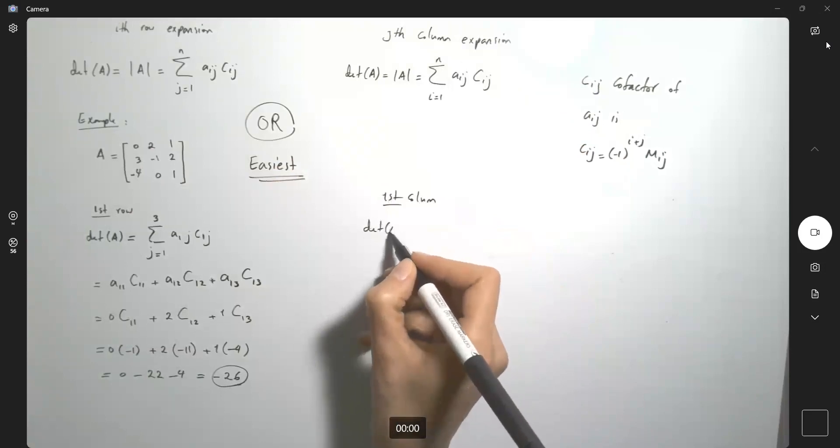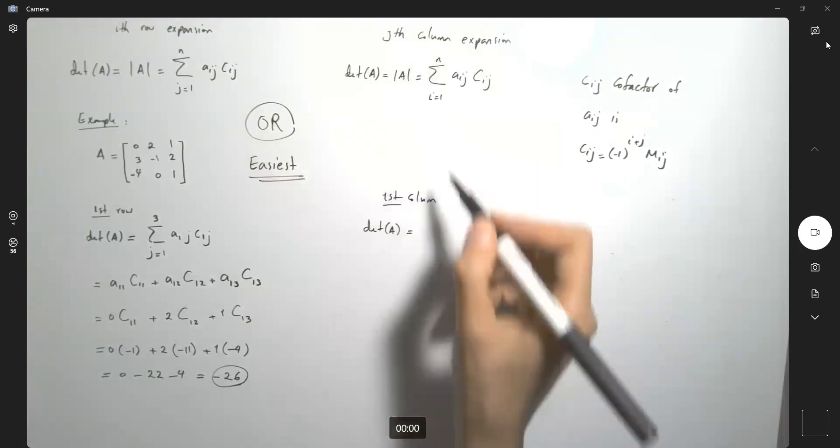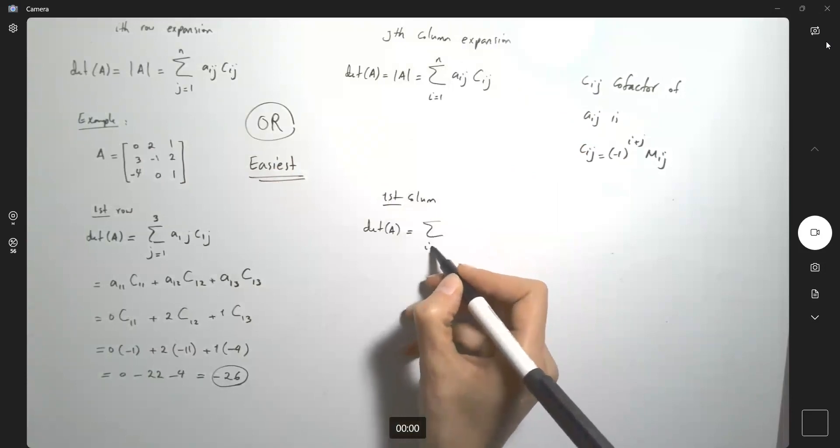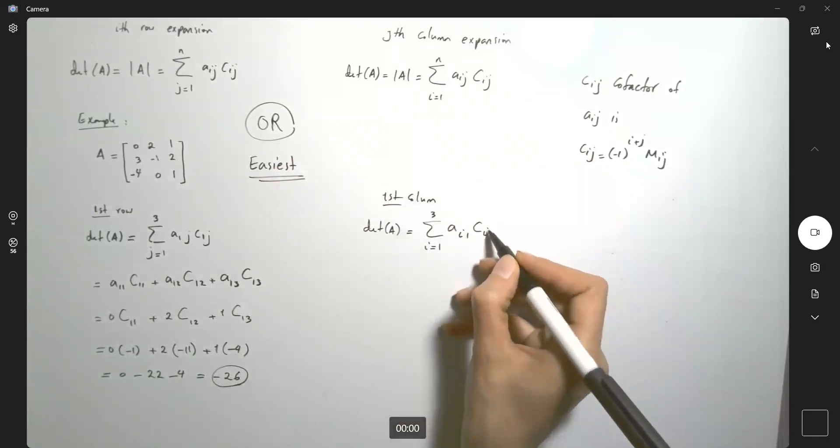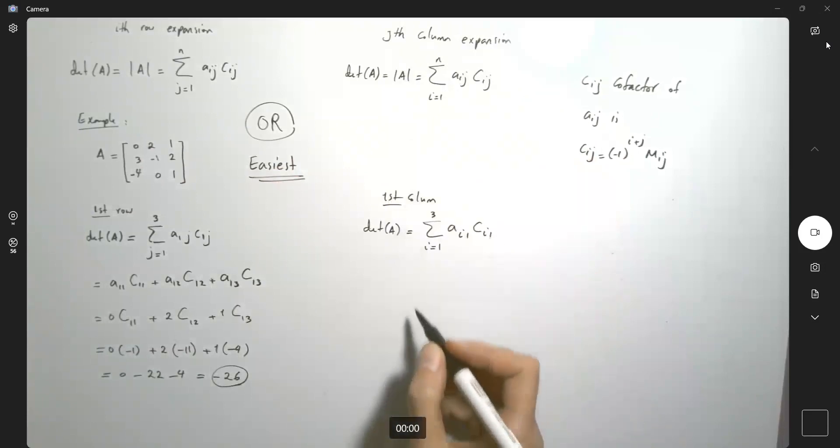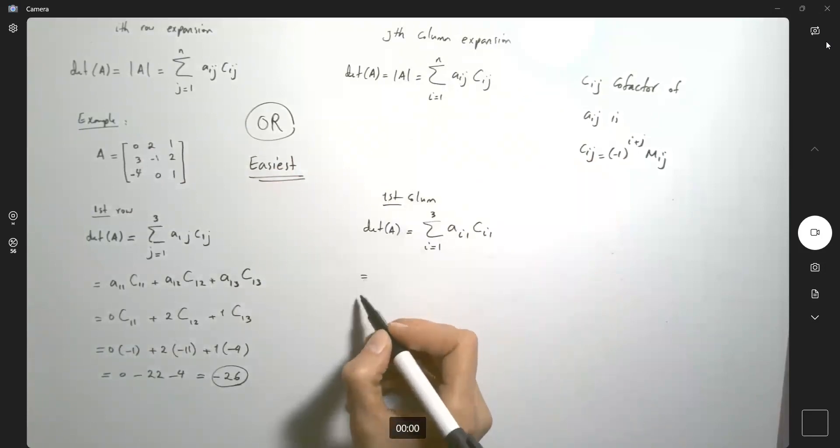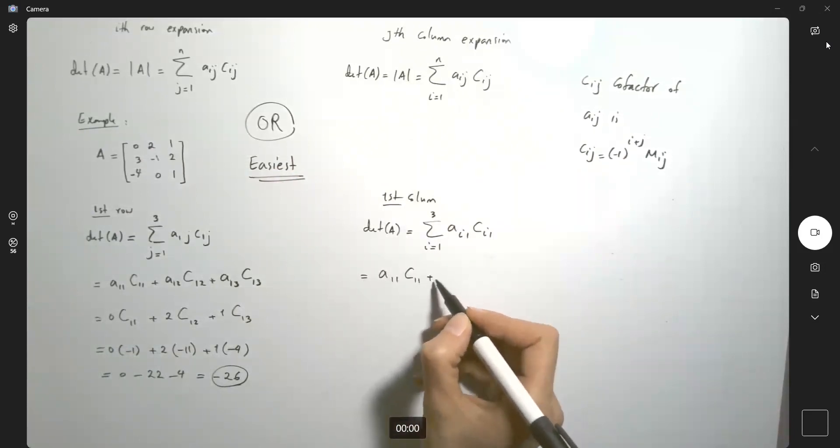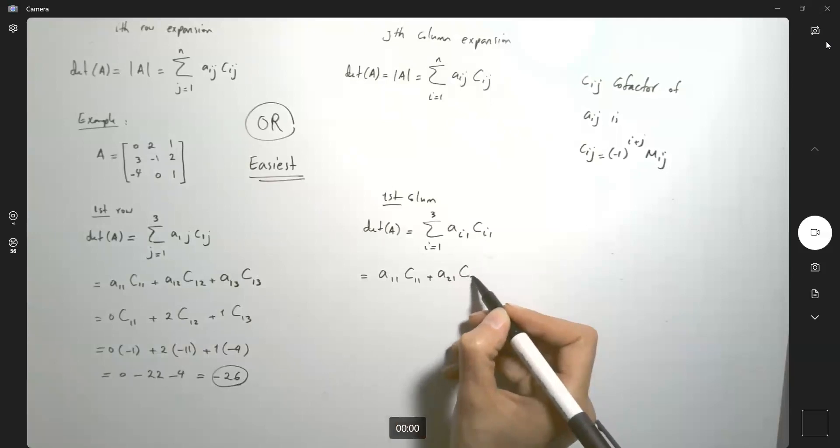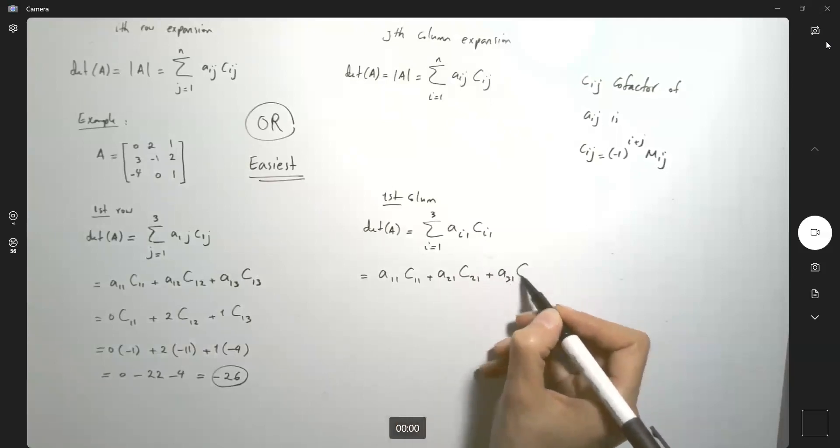By definition, the determinant of A is equal to the sum. i starts from 1 to 3, Ai,1 times Ci,1. So the determinant is equal to A1,1 times C1,1 plus A2,1 times C2,1 plus A3,1 times C3,1.